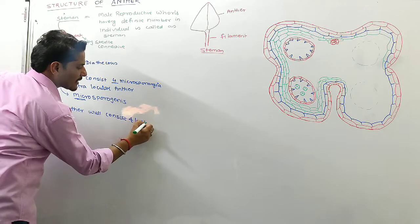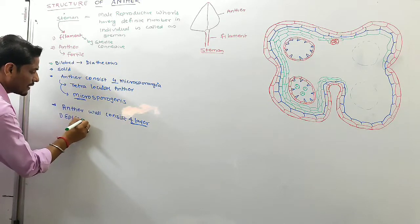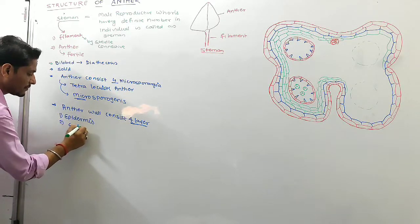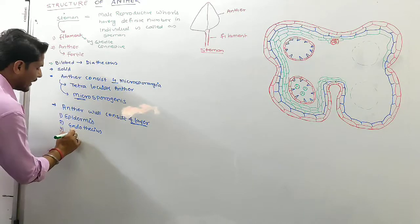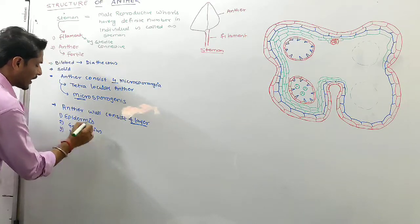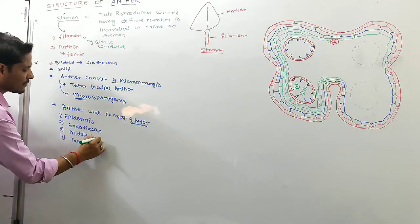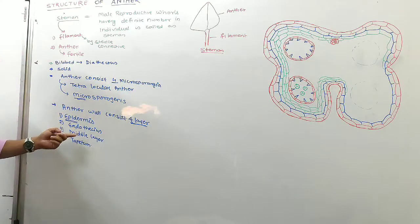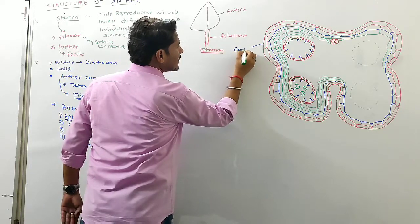The microsporangia wall consists of four layers. The first is epidermis, the second is endothecium, and the third is the middle layer.